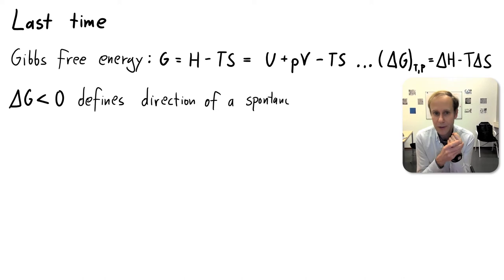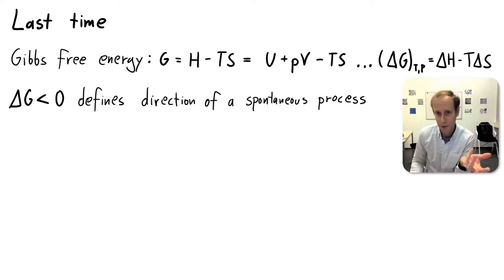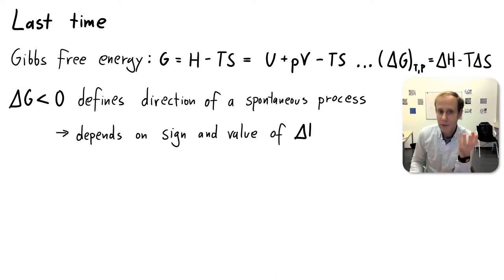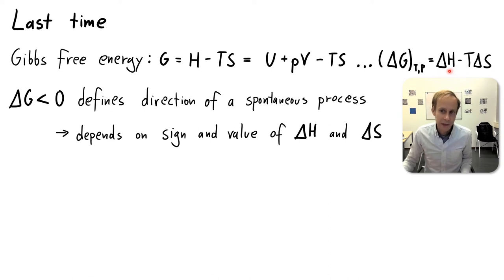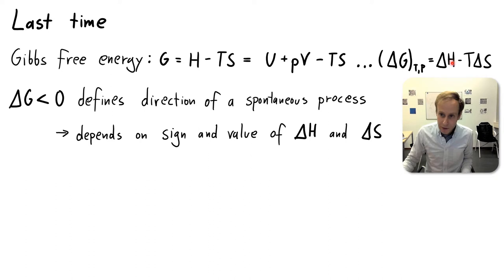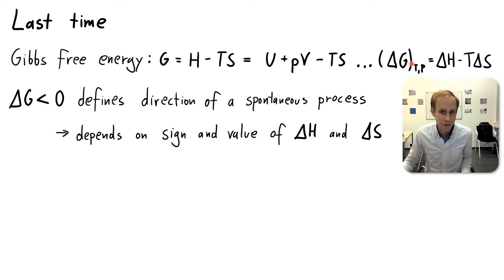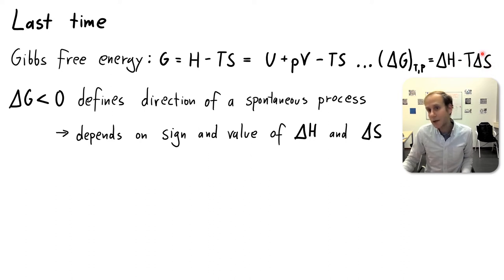We found that for a spontaneous process, delta G must always be smaller than zero. So the sign of delta G tells you whether a process is spontaneous or not. That sign depends on the sign and value of delta H and delta S. For instance, if you have a large positive delta H term, then a positive change of entropy may not be sufficient to make delta G negative, so you may still have a positive delta G and the process is non-spontaneous.